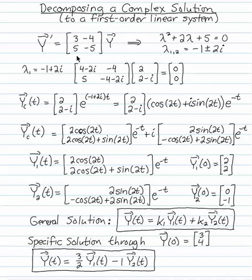So let's look at the system defined by the matrix 3 minus 4, 5 minus 5. Trace negative 2, determinant 5. Characteristic equation, eigenvalues minus 1 plus or minus 2i.